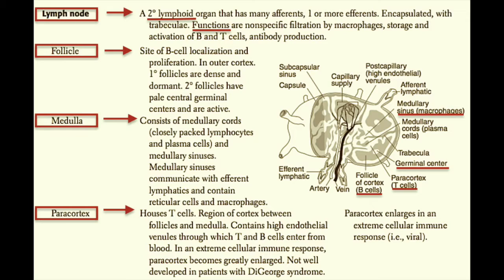Remember that immunology and immune response is all about proliferation. When somebody gets infected with a virus, for example, you see swollen lymph nodes — because of the expansion in this pericortical area. It's also important to note that sometimes we don't see well-developed lymph nodes in people with immunodeficiencies. A classic example of this is DiGeorge's syndrome.